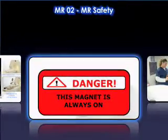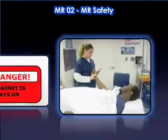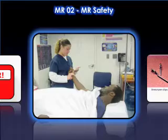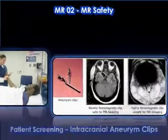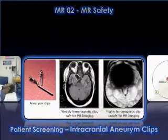The second part, titled MR02 MR Safety, provides an overview of magnetic resonance imaging safety, including a review of magnetism safety, RF safety, safety for time-varying magnetic fields, patient screening, and patient care in the MR environment.